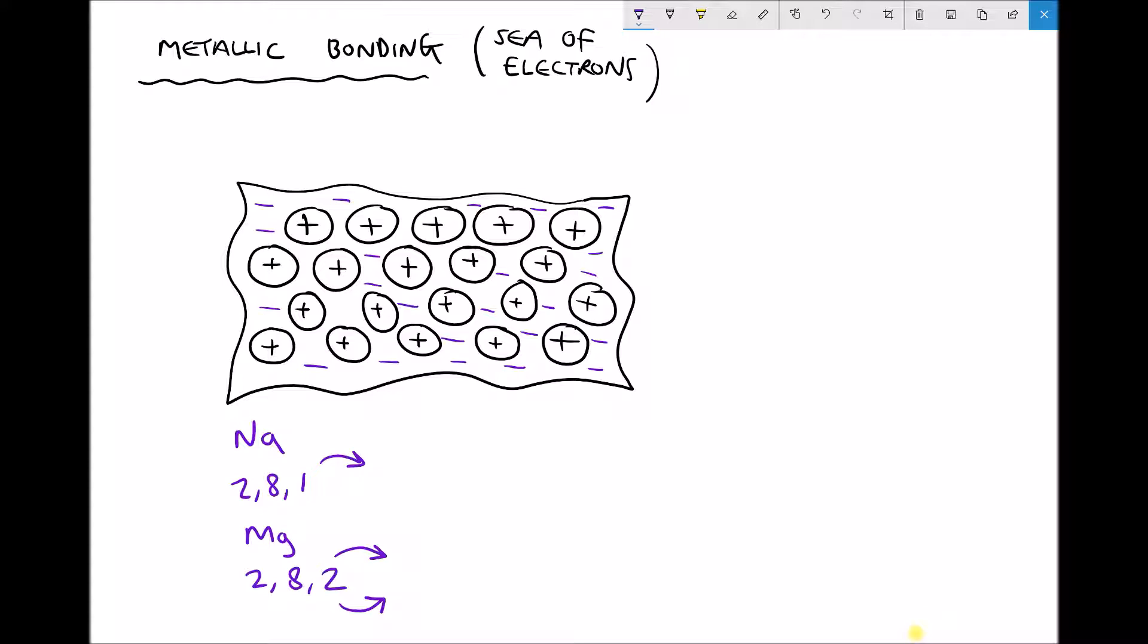The behavior that we observe in metals is that these electrons in the outer shell actually dislocate from the atom, and when an atom loses an electron it becomes an ion. So here we have positive metal ions and here we have our negative electrons.